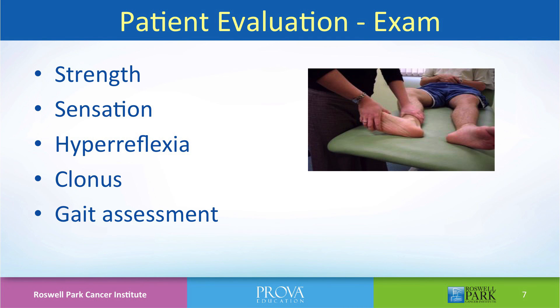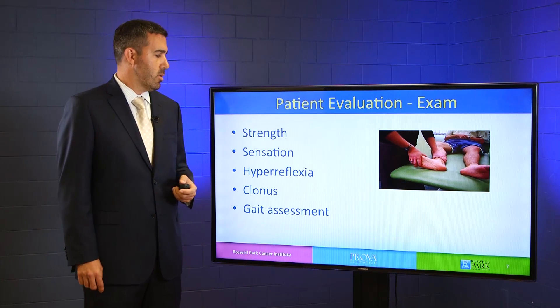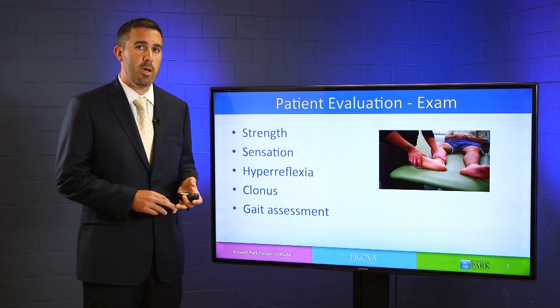The next step after a detailed history is a physical exam. You want to test for the patient's strength, including individual muscle testing, and also test the patient's gait. In some cases of spinal cord compression and proximal muscle weakness, a patient may have full or near-full strength on individual muscle testing, but have difficulty on gross testing such as gait or tandem gait. You also want to test the patient's sensation and check for any signs of upper motor neuron dysfunction or long-tract signs like hyperreflexia or clonus. Even a subtle change in neurologic function in a patient you've been following should prompt you to look more closely for spinal metastatic disease.